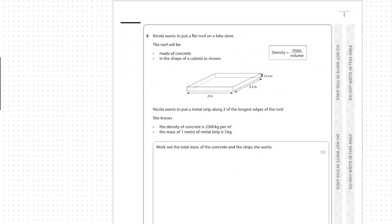Okay, question 5. Nicola wants to put a flat roof on a bike store. The roof will be made of concrete in the shape of a cuboid as shown. So they've got a representation of the flat roof. They've also got part of a magic triangle — density equals mass divided by volume.